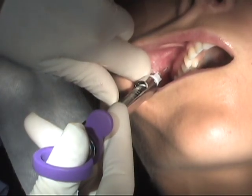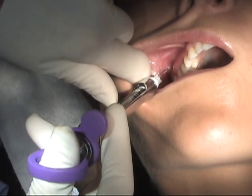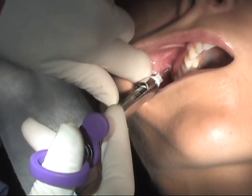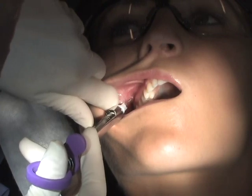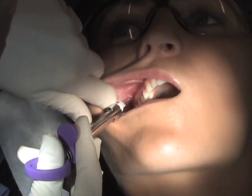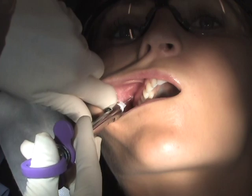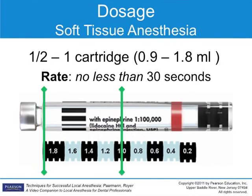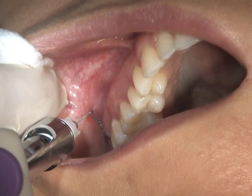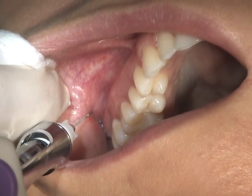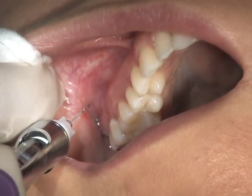Aspiration should occur on more than one plane during this injection to be sure that you are not intravascular. Rotate the syringe barrel slightly away from you to change the direction of the bevel between aspirations. Approximately one half to one cartridge of anesthetic is deposited depending on patient factors and the treatment planned. Following deposition of the solution, gently remove the needle and make the needle safe.